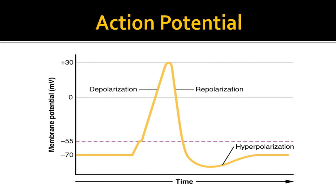This is a pictorial representation of the action potential. Initially the resting membrane potential is minus 70 millivolts. After a stimulus, the membrane potential becomes less negative. Once it reaches minus 55 millivolts — the threshold for generation of an action potential — depolarization occurs, and the membrane potential goes up to plus 30 millivolts, followed by repolarization. Hyperpolarization is the phase where the membrane potential becomes more negative than the resting membrane potential before returning to it. The correct sequence is: stimulus, depolarization, repolarization, and hyperpolarization.